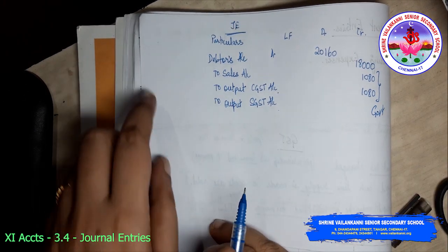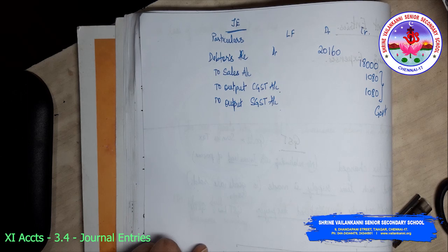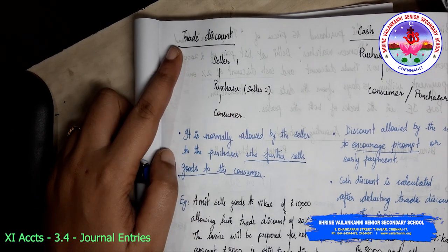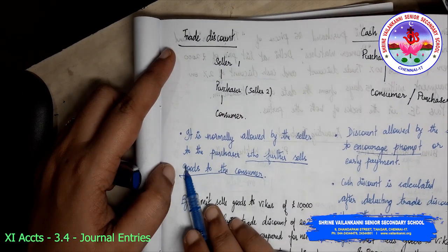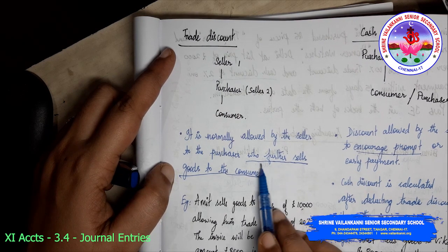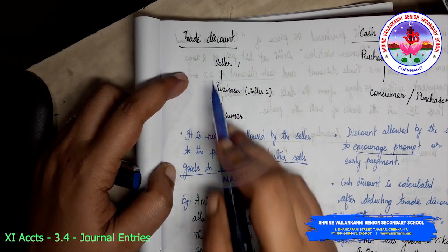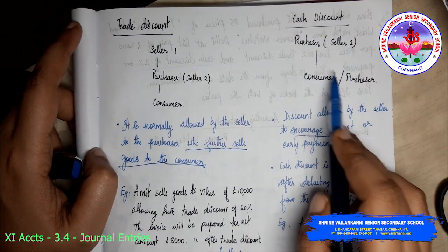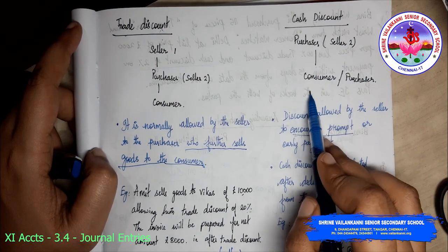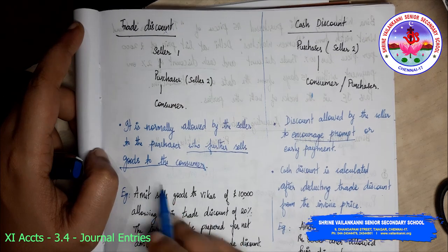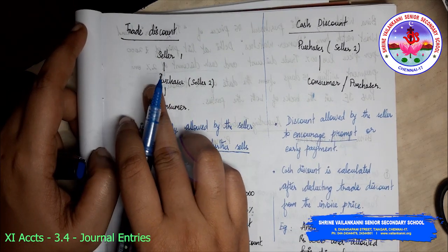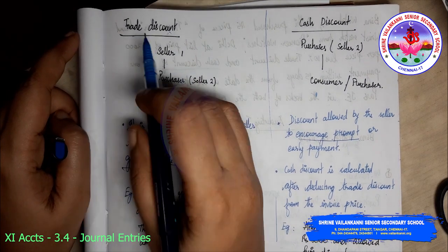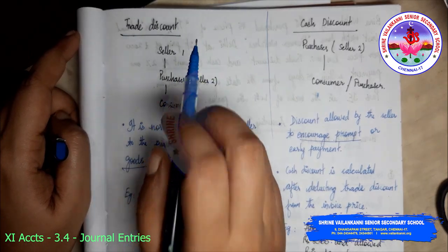I hope this video is clear and you are able to understand the basics of GST. To recap: trade discount is normally allowed by the seller to the purchaser who further sells goods to the customer. We are not talking about cash discount here. GST is charged on the net value after deducting the trade discount. I will see you in the next video — keep practicing, thank you.